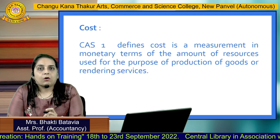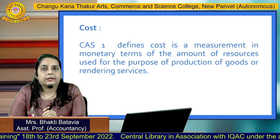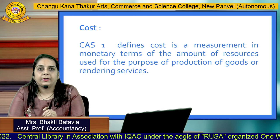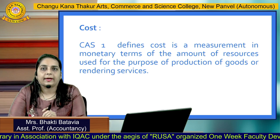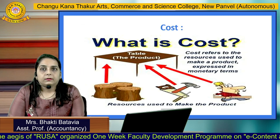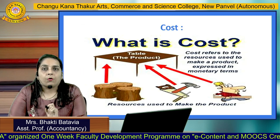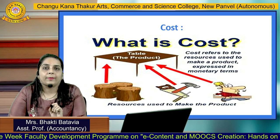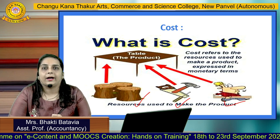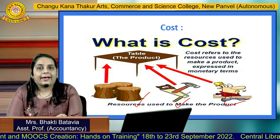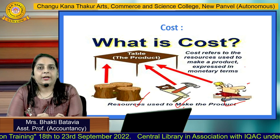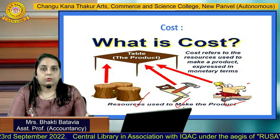Cost is a measurement in Monetary Terms. CAS 1 — that is Cost Accounting Standard 1 — defines Cost as a measurement in Monetary Terms of the amount of resources used for the purpose of production of goods and rendering services. For example, to manufacture a table, we need wood, instruments, and workers. The expenses for the wood, instruments, and workers' payment are all included — that is the Cost.